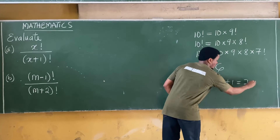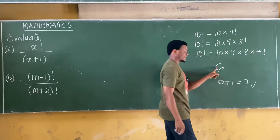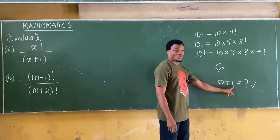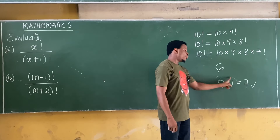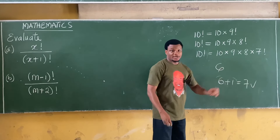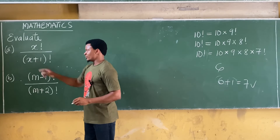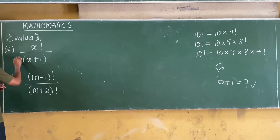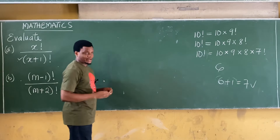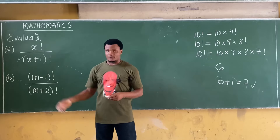Obviously 7 is bigger than 6. So if I have a number plus 1, that number will always be bigger than the original. This means x+1 > x, so the denominator (x+1)! is bigger than the numerator x!.